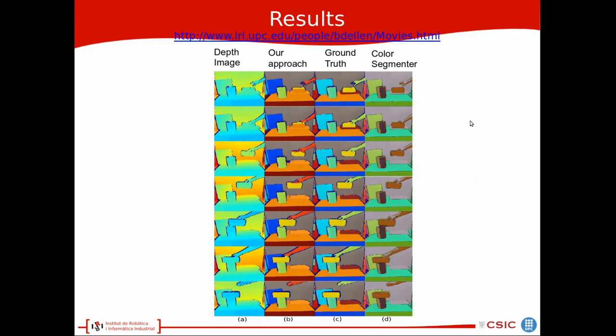This is another example with a human hand manipulating a box and we can see similar results. For the color segmenter we can see that the hand got merged with the background whereas in our case this did not happen.